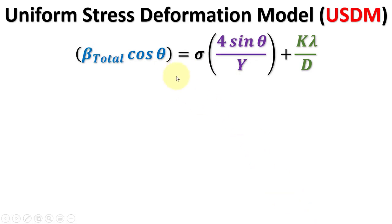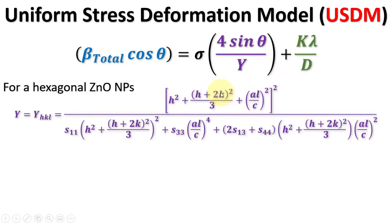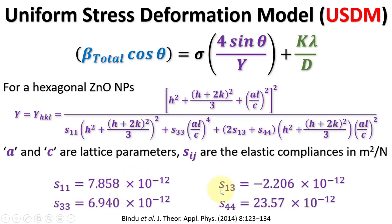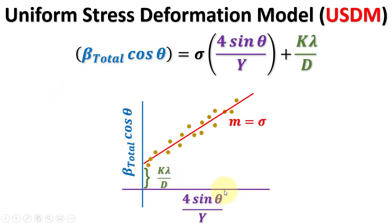The Williamson-Hall equation is thus modified accordingly. We will consider the example of hexagonal ZnO nanoparticles, for which the Young's Modulus is given by a specific equation. Here, A and C are the lattice parameters, and Sij are the elastic compliances in m² per N, whose values have been taken from a reference. Therefore, in the Uniform Stress Deformation Model, we plot 4 sin theta over Y on the x-axis, and beta cos theta on the y-axis. From the slope we get the stress, and from the intercept the crystallite size.